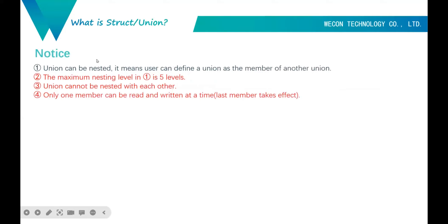There are also some notes about union. First, same as struct, union can be nested — a user can define a union as a member of another union. Second, same as struct, the nesting limit is five levels. Third, union can't be nested with each other circularly — we can't set union A as a member of union B and at the same time set union B as a member of union A.